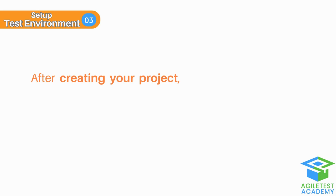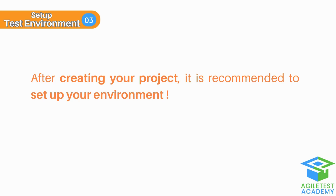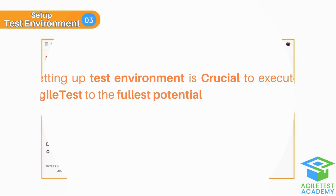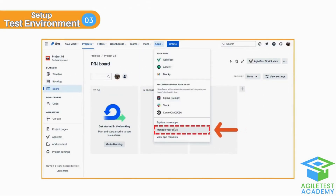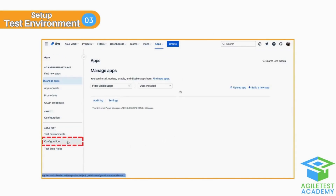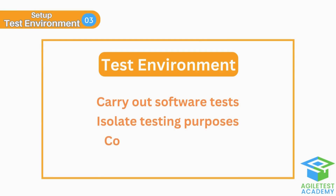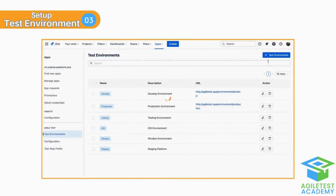Test Environment. After creating your project, it is recommended to set up your environment first, in case you have not done it yet. Setting up the app environment is important to execute Azure Test to the fullest potential. Manage your apps under the apps dropdown. On the left side panel, we find Test Environments, Configurations, and Test Step Fields. A test environment is a setting configured to carry out software tests, isolating testing purposes from other operations to confirm that the software works correctly. We can add, delete, and manage test environment settings.